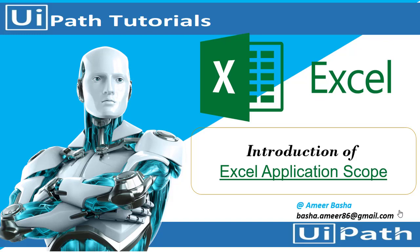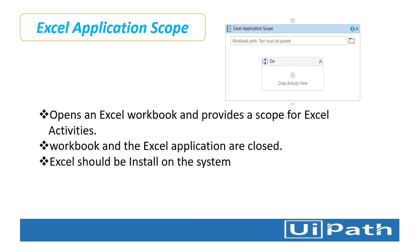Hello everyone. In this session we are going to learn about the Excel Application Scope activity. As the name suggests, this activity helps us to perform different operations on an Excel. If you want to perform any Excel operations using UiPath Studio, first of all we need to know about Excel Application Scope. It is used to open an Excel workbook and provides a scope for Excel activities. When the execution of this activity completes, the specified workbook and the Excel application are closed.